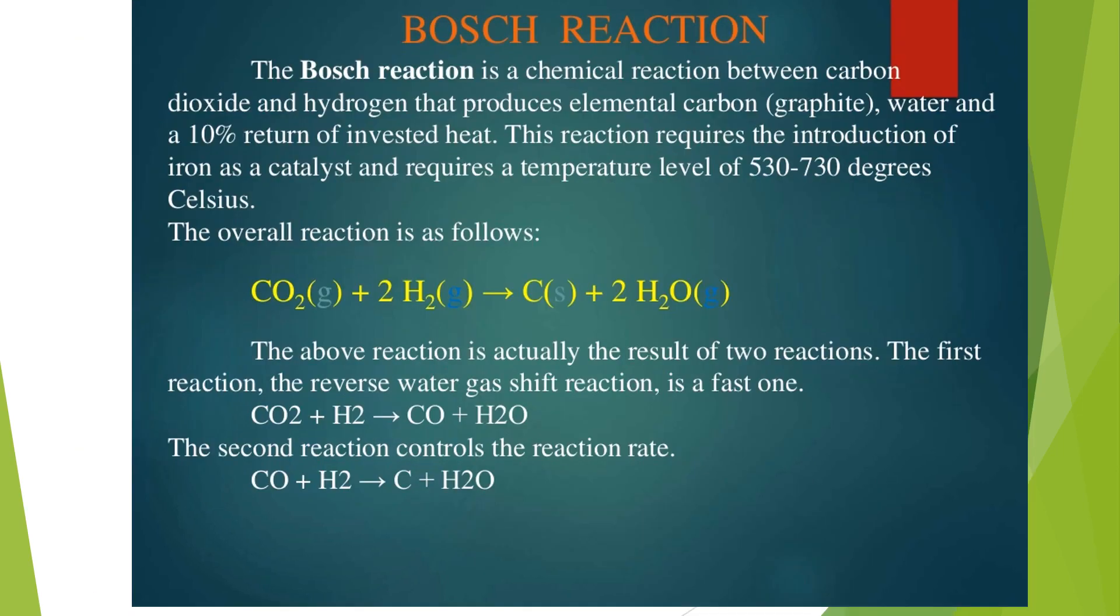Properties of hydrogen: Bosch reaction is a chemical reaction between carbon dioxide and hydrogen that produces elemental carbon (graphite), water, and 10% return of invested heat. This reaction requires iron as a catalyst and a temperature of 530 to 730 degrees Celsius. The overall reaction is: CO2 gas plus 2H2 gas converts into C solid plus 2H2O gas.